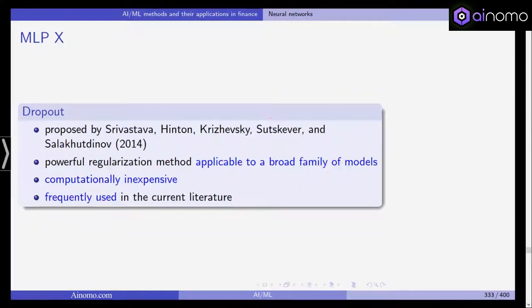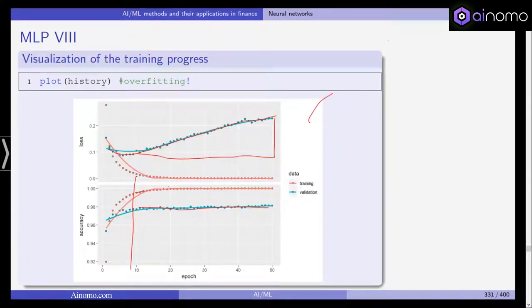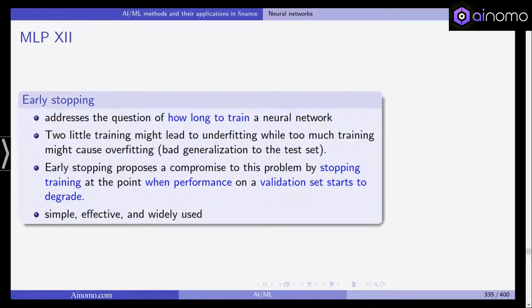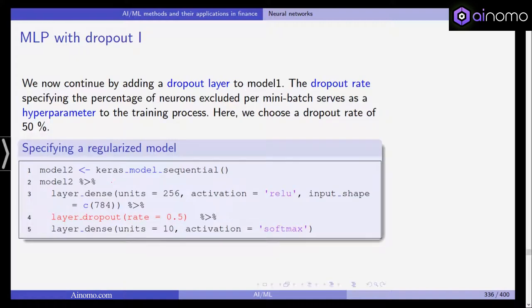Too little training might lead to underfitting if we had stopped earlier, let's say after maybe five epochs or three epochs. If we stopped too late, we get overfitting. Early stopping proposes a compromise by stopping training at the point when performance on the validation set starts to degrade. It's very simple, very effective, and widely used.